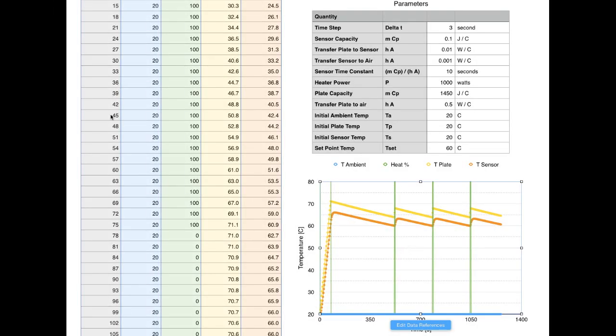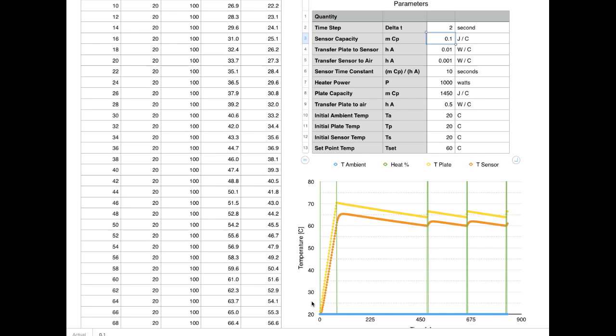This plot plots all the data from our temperature history information, and changing the parameters up here will change what we see on the plot. So if I go from three seconds down to two seconds on the time step, I see more detail over a shorter period of time.